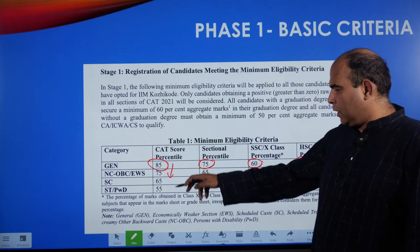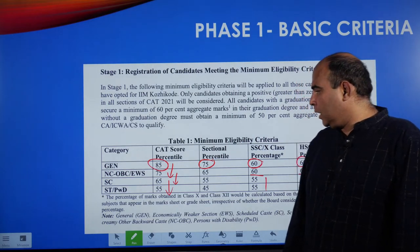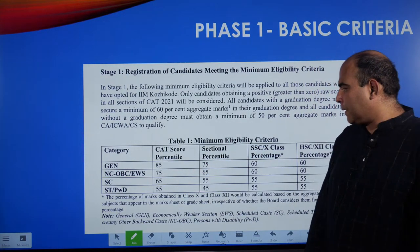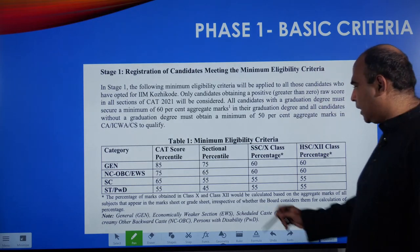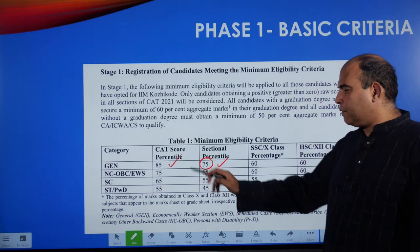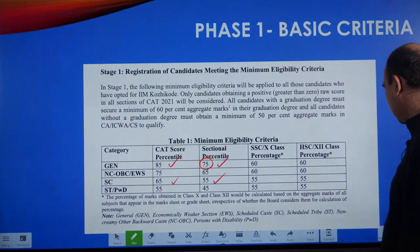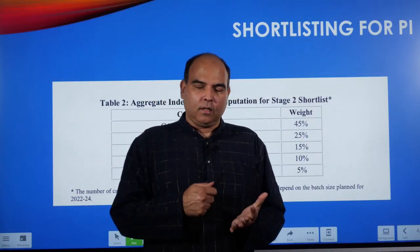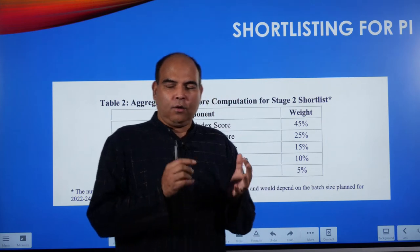There is a 10-percentile relaxation for EWS, another 10-percentile relaxation for SC, and another 10-percentile relaxation for ST and PWD on the CAT score percentiles. So the overall cutoffs are 85, 75, 65, and 55 for the respective categories, and the sectional percentile cutoffs are 75, 65, 55, and 45 respectively. If you qualify on the CAT percentile, sectional percentiles, 10th score of 60%, and 12th score of 60%, you move to Stage 2 of the selection criteria.